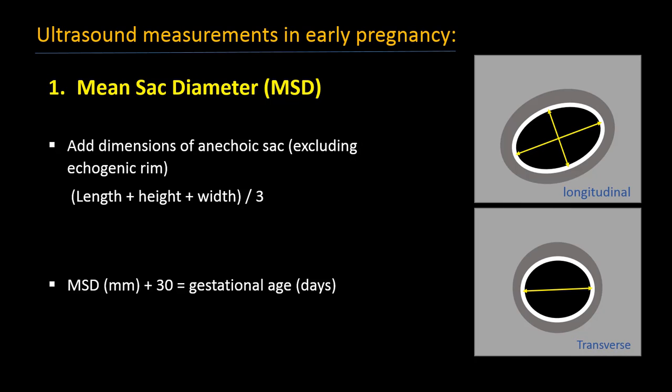Mean sac diameter is a sonographic measurement of the gestational sac, which is usually first seen at around 5 weeks after the last menstrual period. Mean sac diameter is calculated by measuring the anechoic sac, excluding the echogenic rim. It is calculated by measuring length plus height plus width, then dividing by 3. If the calculated mean sac diameter is outside the range of the ultrasound machine, the gestational age is calculated as: mean sac diameter in millimeters plus 30 equals days of pregnancy.